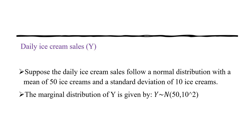Similarly, for daily ice cream sales, suppose the average is 50 ice creams and the standard deviation is 10 ice creams. The marginal distribution would be y ~ N(50, 10²). So these are the marginal distributions, each describing the distribution of a single variable.